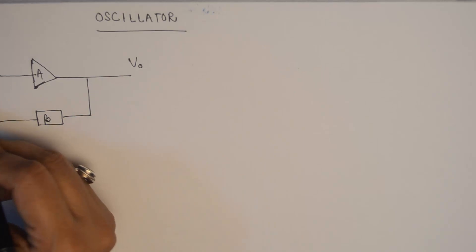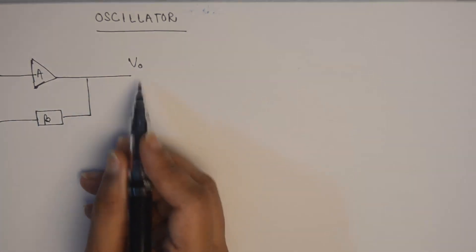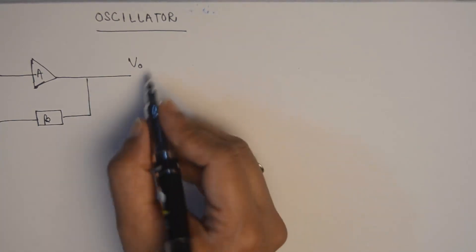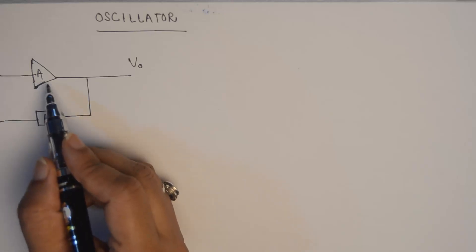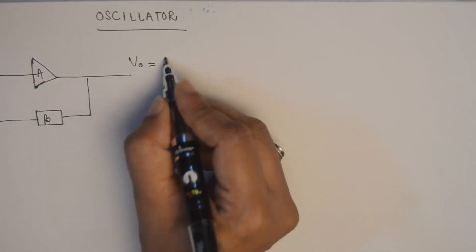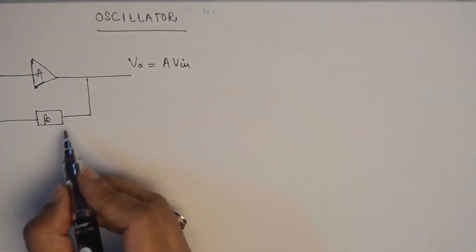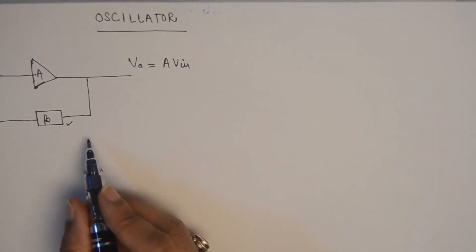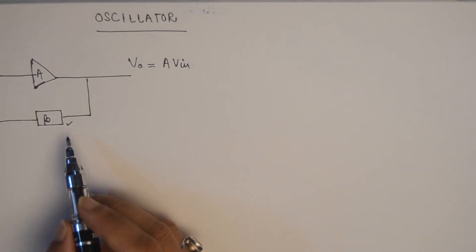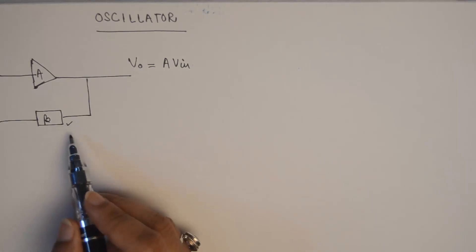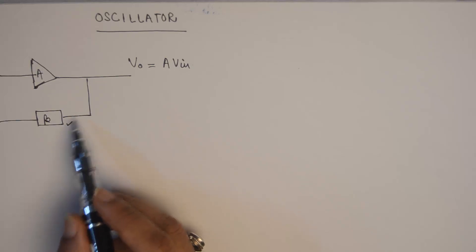Let us say I give a sinusoidal input as Vin to this amplifier and I get the output V0. You can very easily make out that V0 will be equal to the gain multiplied by the input signal Vin — so V0 is equal to gain times Vin. This beta here is a frequency selective circuit. Please remember this: it is a frequency selective circuit, which is a very important aspect of this oscillator.